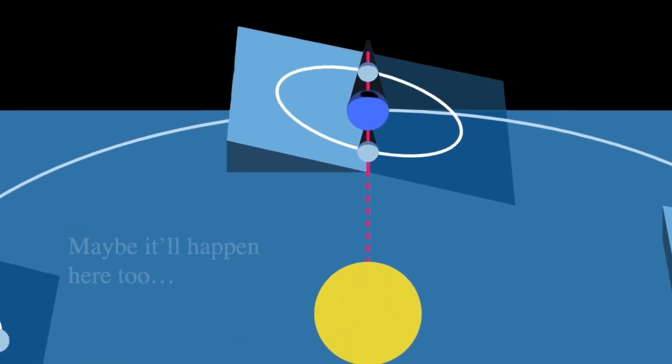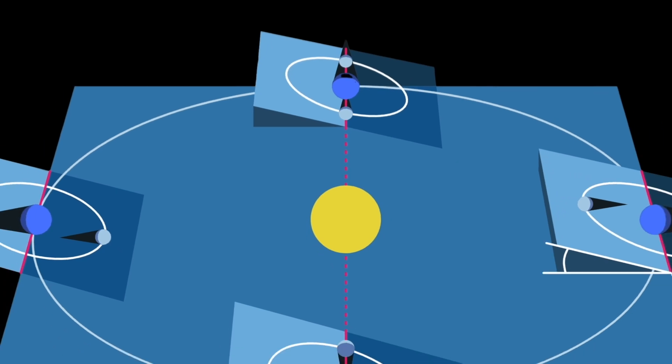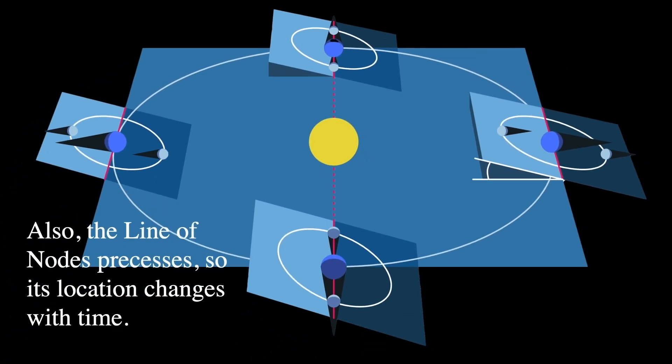And likewise, six months later, it certainly might happen there too. But it certainly seems a little weird because it looks like I'm drawing it that they're always at the same time. So you should be able to line this up. However, the line of nodes also precesses. So that means its location changes with time.